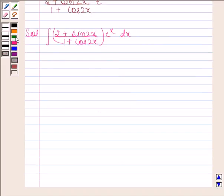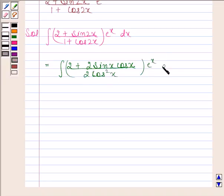Now this is equal to integral 2 plus sine 2 theta is equal to 2 sine theta cos theta. So sine 2x is equal to 2 sine x cos x by, we know that 1 plus cos 2 theta is equal to 2 cos square theta. So 1 plus cos 2x is equal to 2 cos square x into e to the power x dx.